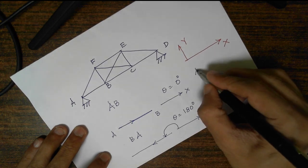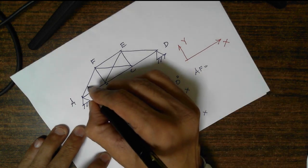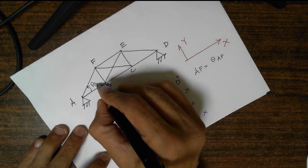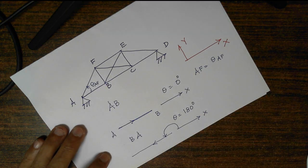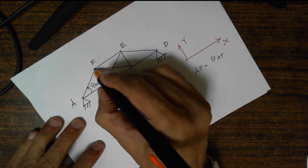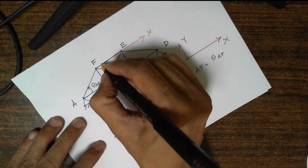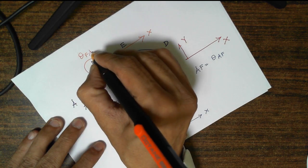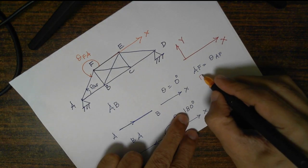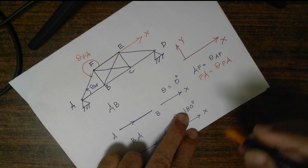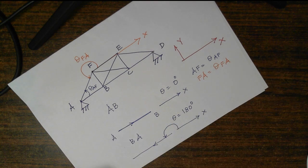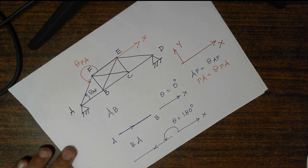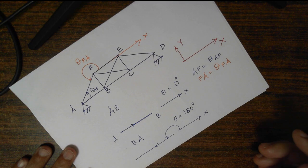Consider member AF: θ_AF is measured in one direction. But for member FA, θ_FA is measured in anti-clockwise direction from the global x-axis, giving a completely different angle. So θ_AF and θ_FA are two different things. Every time we need to remember that the angle must be measured in anti-clockwise direction, which can cause confusion or calculation mistakes. To avoid those mistakes, I am going to tell you one simple trick.